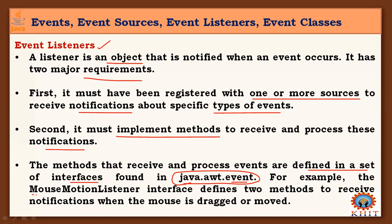The methods to receive and process events are defined in a set of interfaces found in the java.awt package. For example, the MouseMotionListener interface mainly observes what the mouse is doing in the application. It defines two methods: one for notification when the mouse is dragged — meaning clicked and dragged without releasing — and another for when the mouse is moved from one location on the monitor to another. There are many types of listeners, which will be shown next.